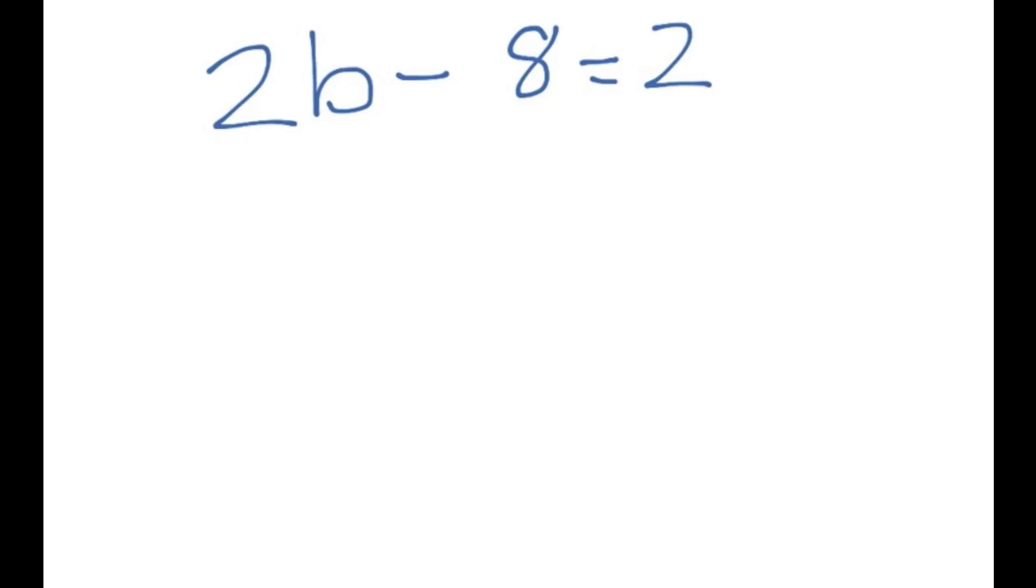So here's our first one. We have 2b minus 8 equals 2. And what you want to do here is something very straightforward. First of all, you want to take the minus 8 and you want to move it to the other side, because we want all the numbers on their own on the right hand side. And we end up with 2b is equal to 2 plus 8. Now remember, whenever you move a minus 8 to the other side of the equal sign, you always end up with the opposite sign. So a minus 8 would become a plus 8.